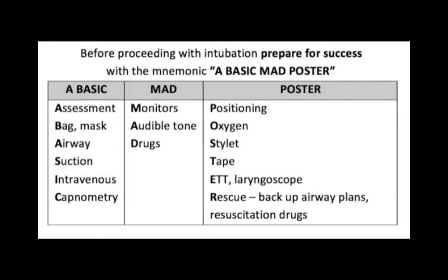A stylet should be positioned in the tracheal tube. Tape should be immediately available to secure the tracheal tube. An appropriate sized tracheal tube and functioning laryngoscope should be prepared and checked. Rescue medications and backup airway plans should be considered before intubation.